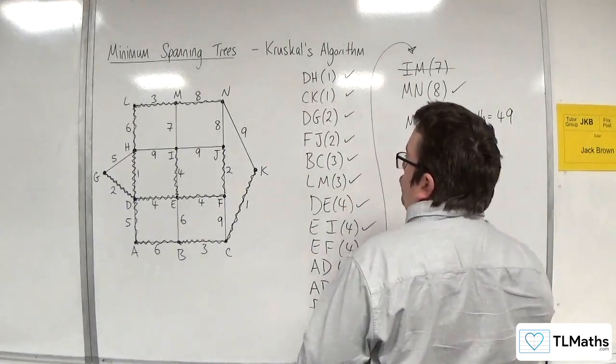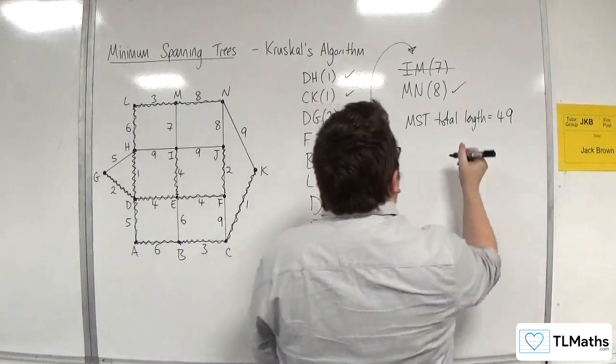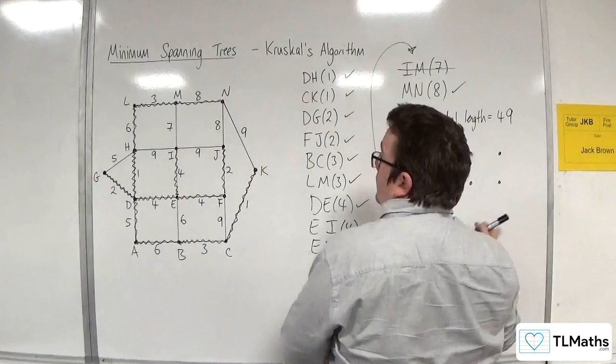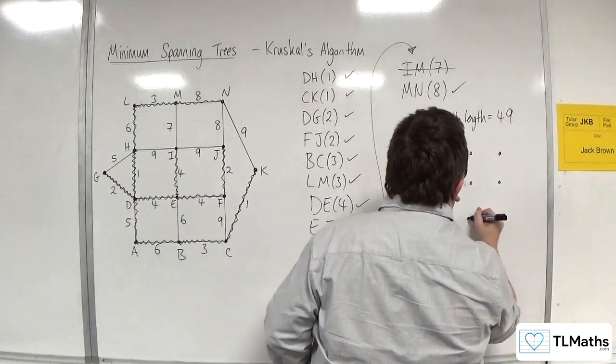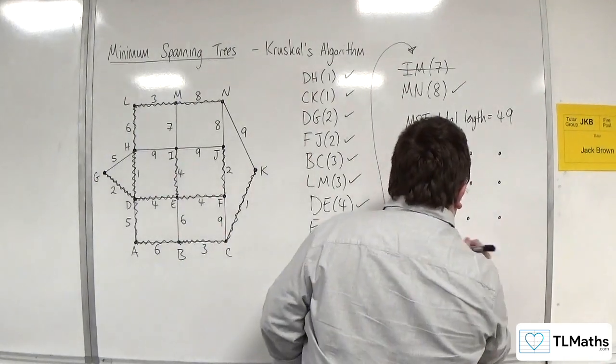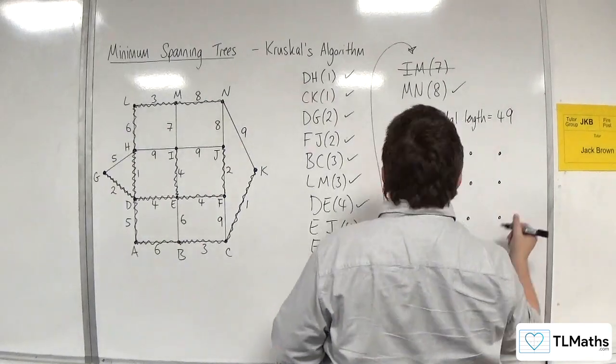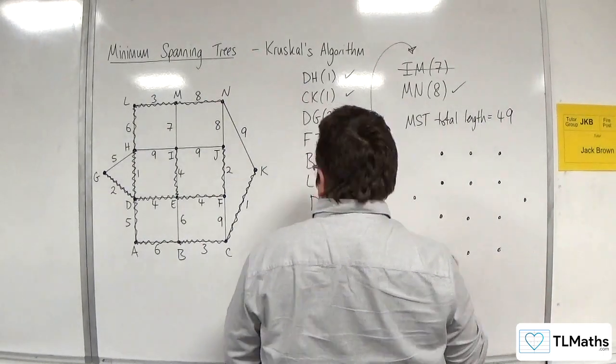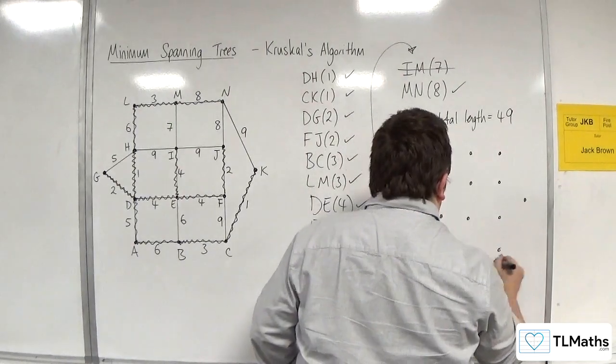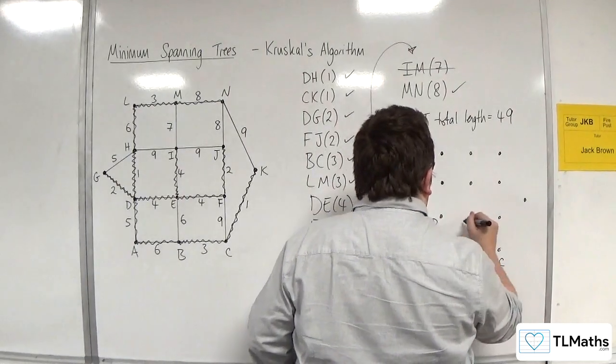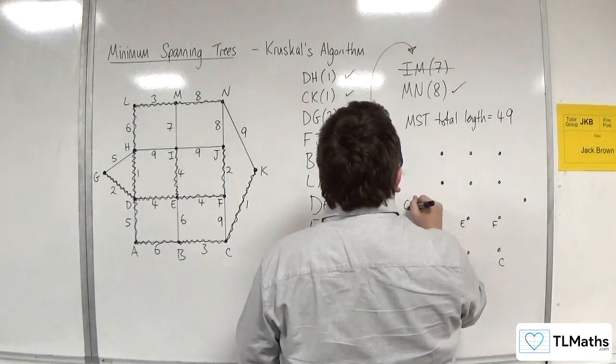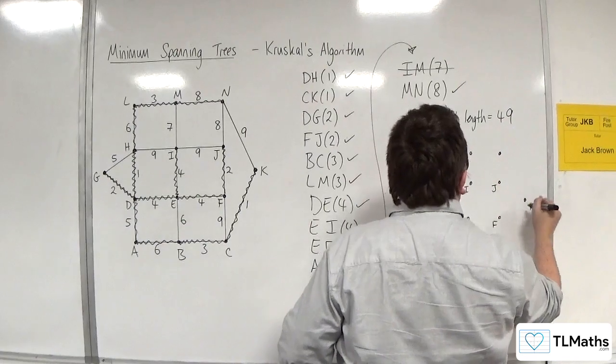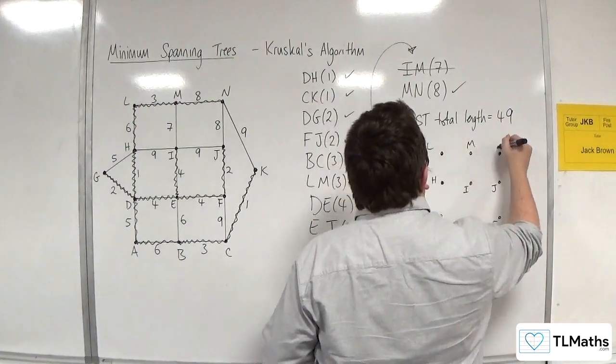And if I had to draw the minimum spanning tree, something like this. So K's over here. G's over here. So we've got A, B, C, D, E, F, G, H, I, J, K, L, M, N.